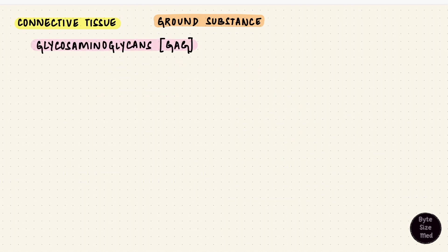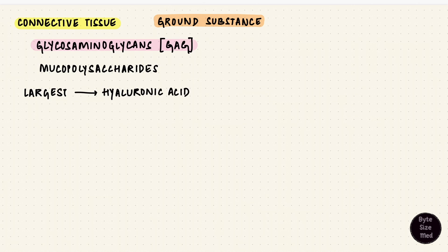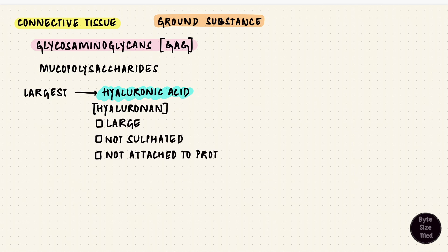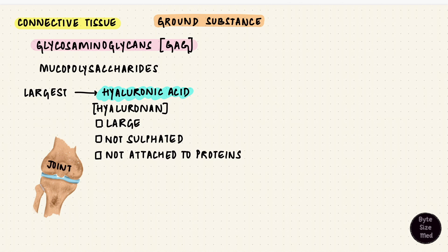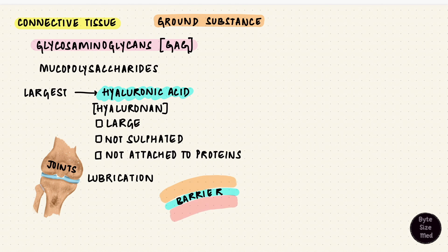Glycosaminoglycans are mucopolysaccharides. The largest and most well-known is hyaluronic acid, also called hyaluronan. It's large, not sulfated, and not attached to proteins — it's not covalently attached to proteins, but it is attached to proteoglycans. It's mostly located in the connective tissue of joints, so it's important for lubrication. It also works like a barrier because of its viscous nature, preventing organisms from moving from the connective tissue into blood.